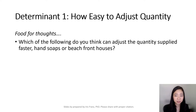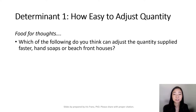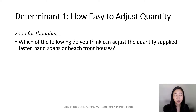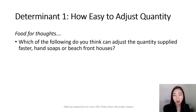Here is the first determinant of price elasticity of supply: how easy it is for a seller to adjust the quantity. I want you to put yourself in the shoes of a seller. Suppose the price goes up — of course, you have an incentive to produce more. But are you able to produce a lot more quickly?